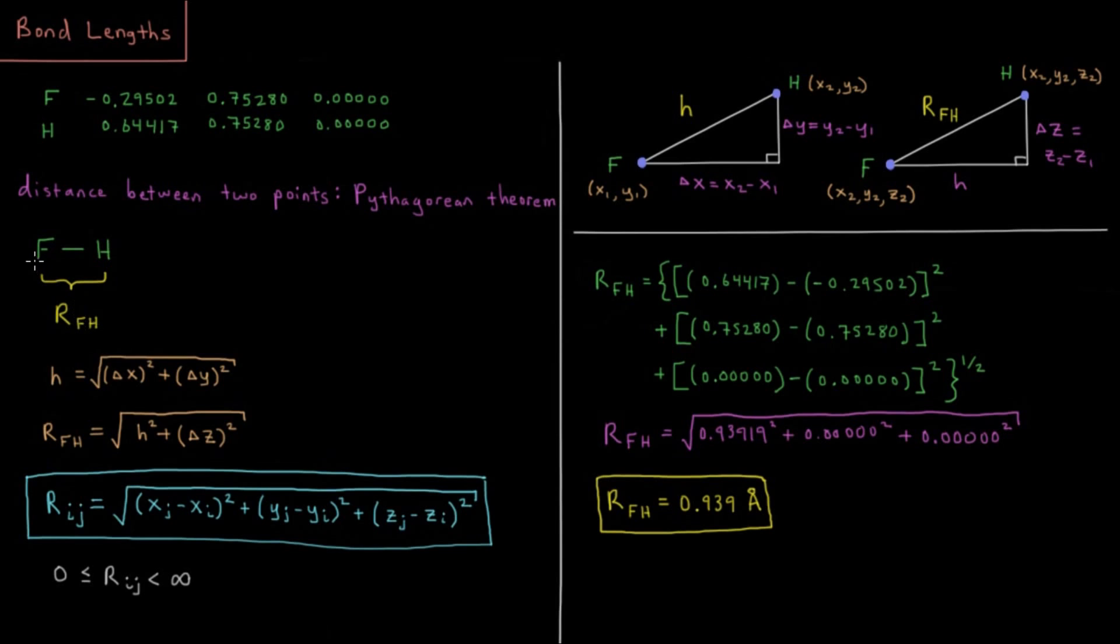We want to find the distance between these two points, which would be the definition of the bond length. These points are what we're using to represent our two atom locations. So the distance between two points is just determined by the Pythagorean theorem. This distance we'll call RHF, some bond length R.